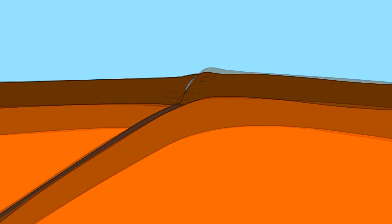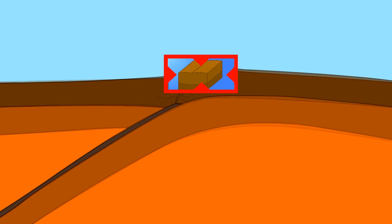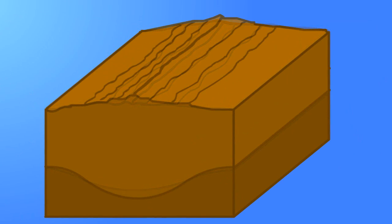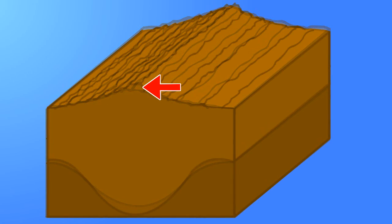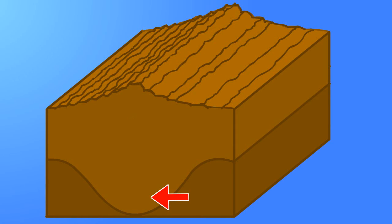Continued compression between the two continents further deformed the rocks. It formed the very high ancestral Appalachian Mountains, and also formed correspondingly deep roots.